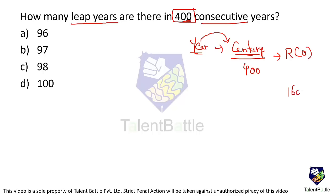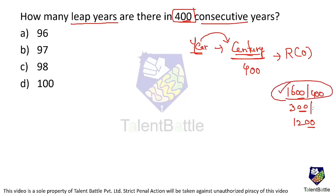For example, 1600, or 300, or 1200 — these are all centuries, ending with two zeros. In this case only, we need to divide by 400. If I divide 1600 by 400, it is exactly divisible, so that is a leap year. If I divide 300 by 400, that's not divisible, so that is not a leap year. And 1200 divided by 400 is divisible, so that is a leap year.